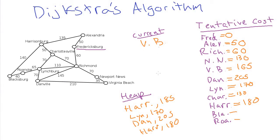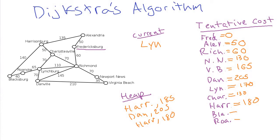Lynchburg is dequeued next. Checking Charlottesville and Richmond — neither is better. Checking Danville: 170 plus 70 is 240, not better than 205. But for Roanoke we have no path at all yet, so 170 plus 65 equals 235, which is better than infinity. We set Roanoke's tentative cost to 235 and enqueue it on the min heap.